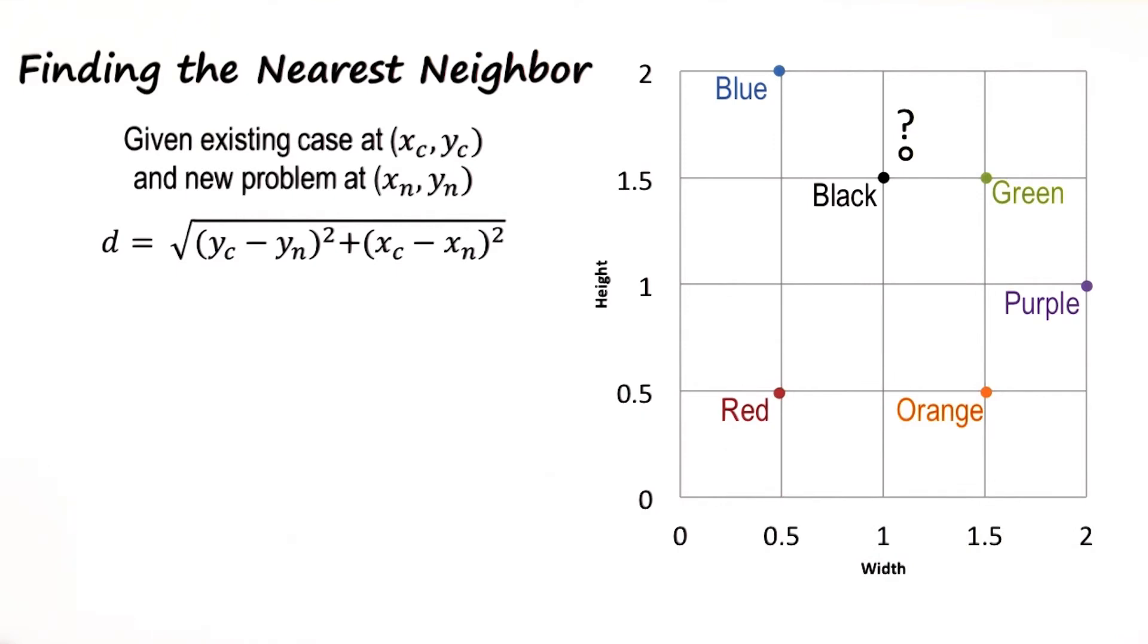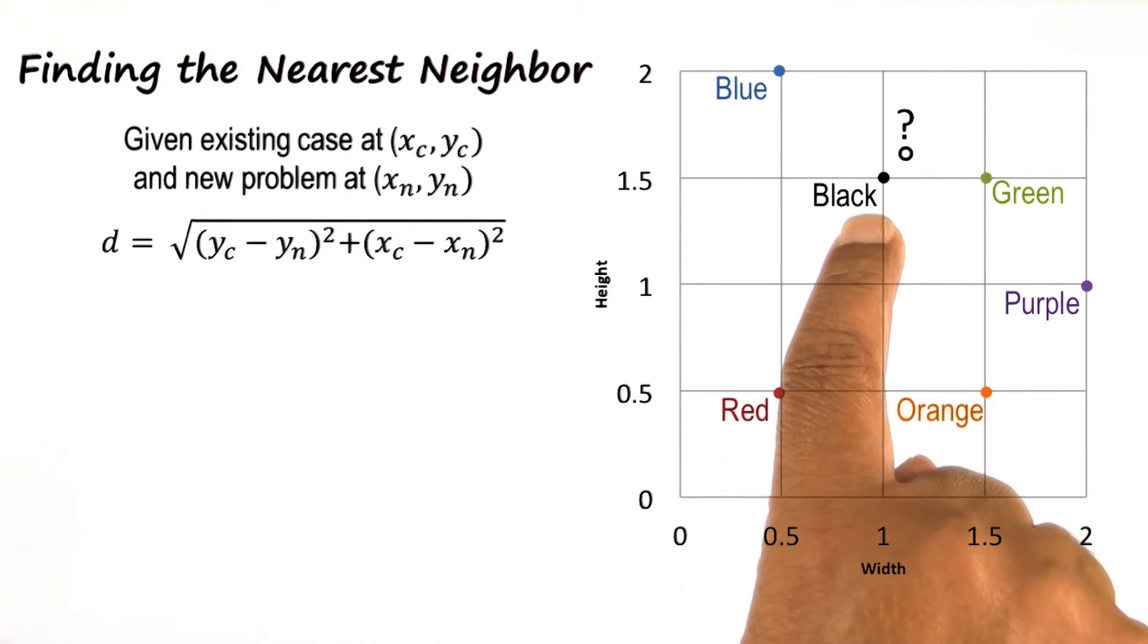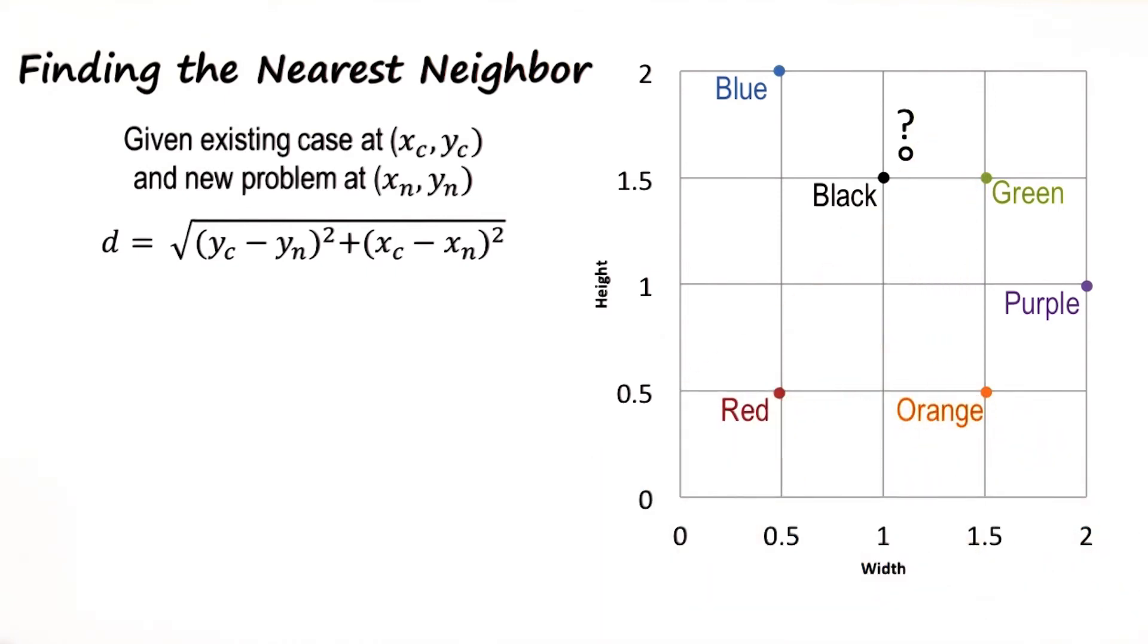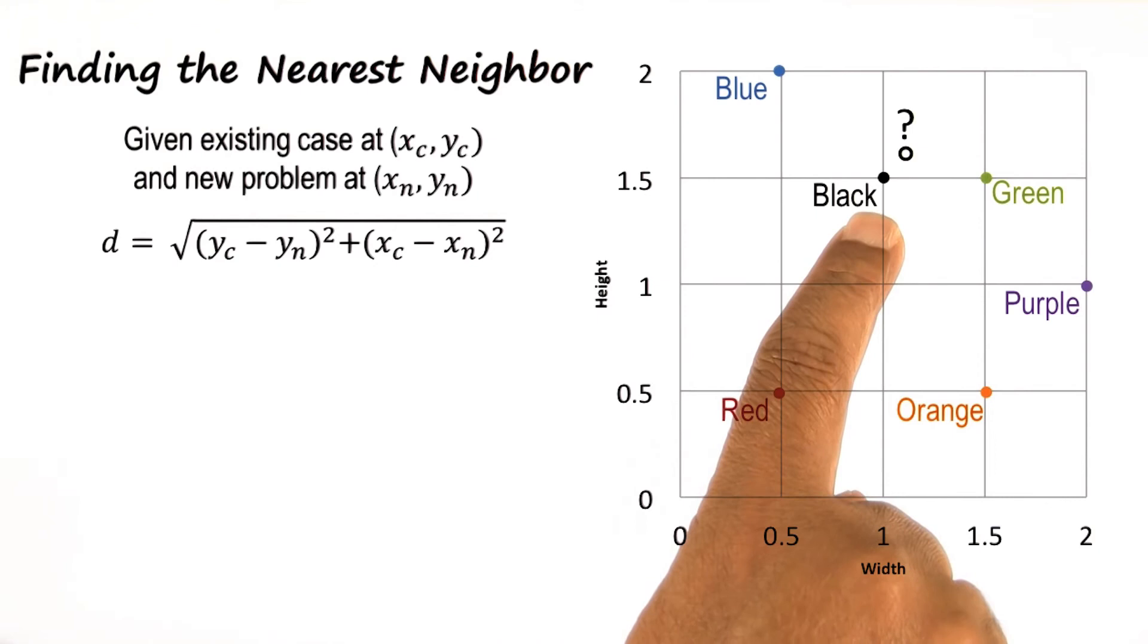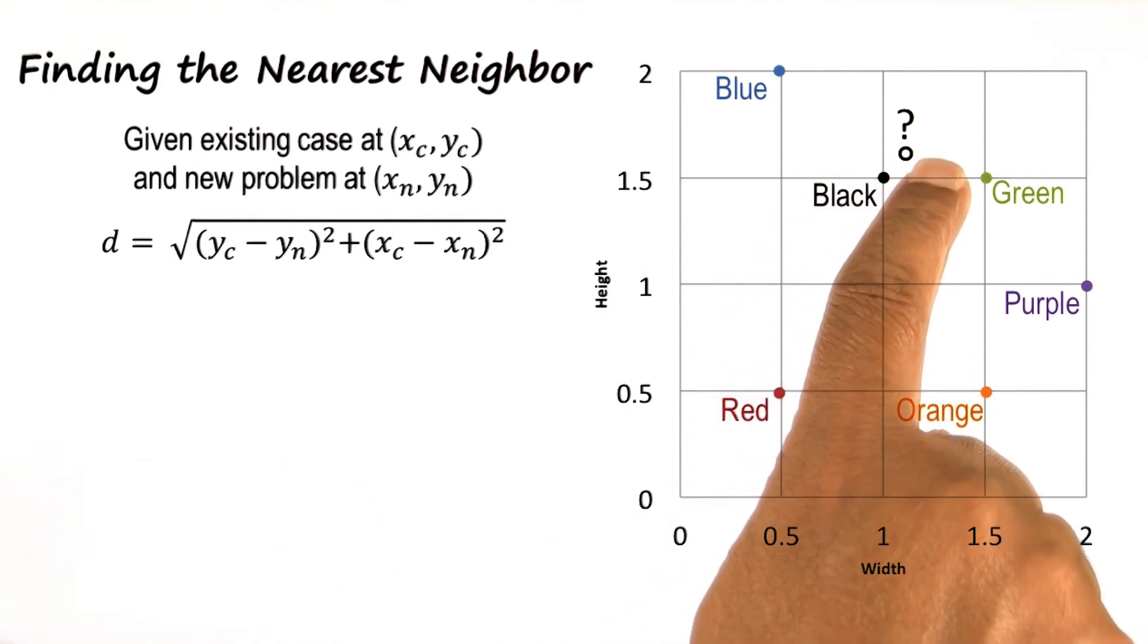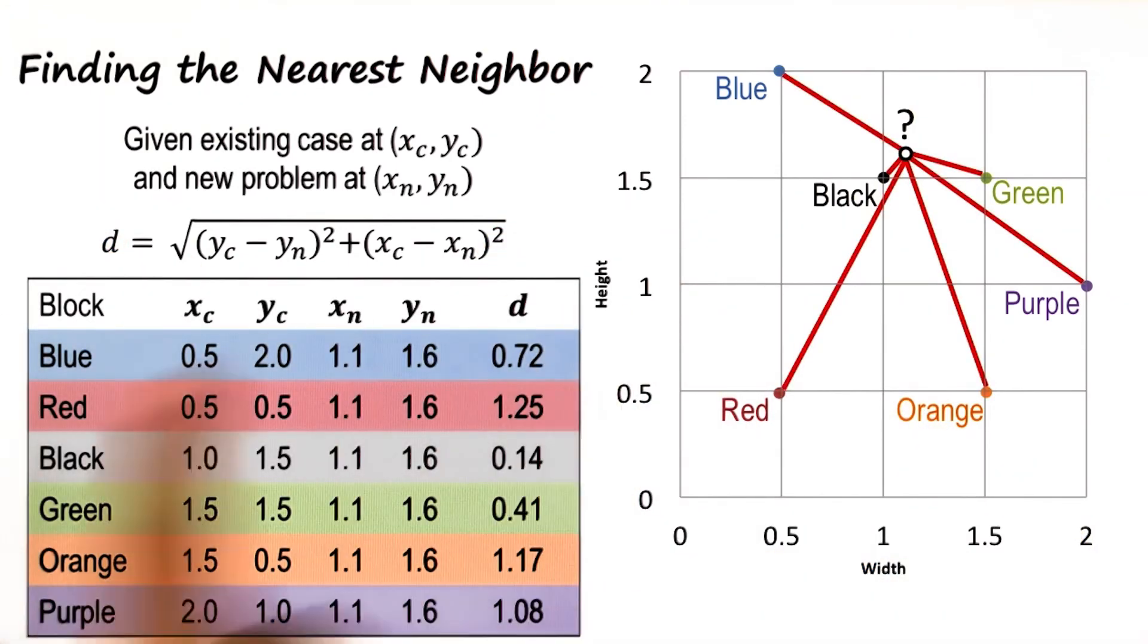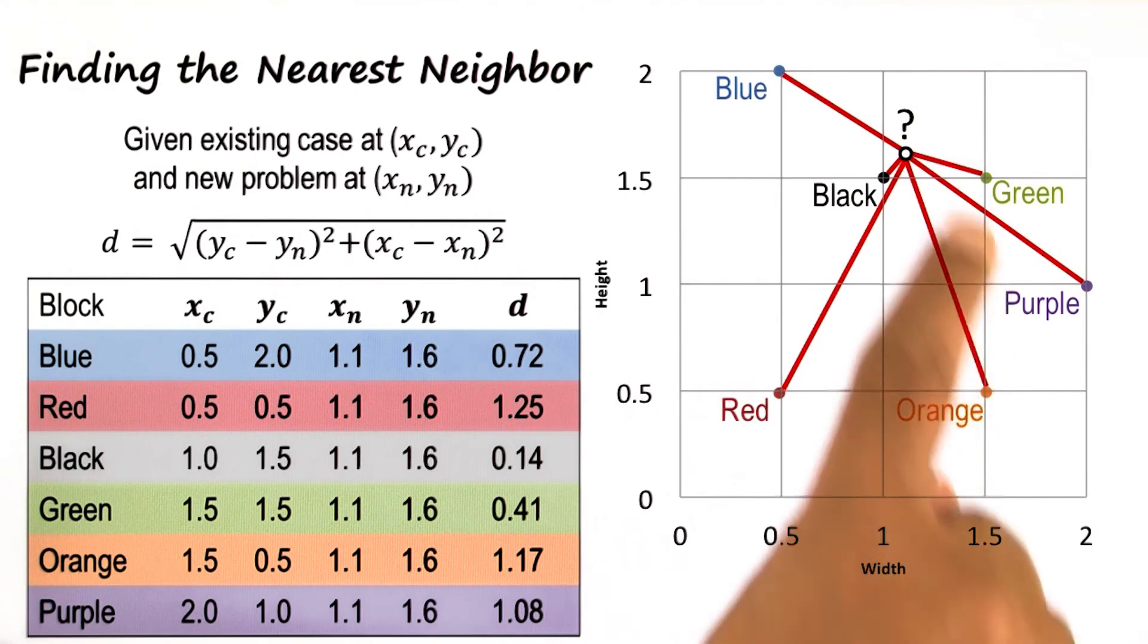Now we need a way of calculating the distance between a problem and a case. One measure of the distance is called the Euclidean distance. Here is the formula for the Euclidean distance. The Euclidean distance between two points, x_c and y_c, which define the case, and x_n and y_n, which define the problem, is given by this formula. Now we can easily calculate the Euclidean distance between each of the cases and the new problem, and this table summarizes the distances.